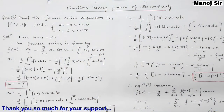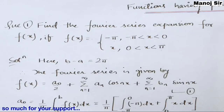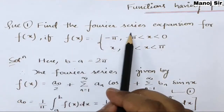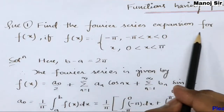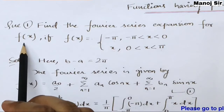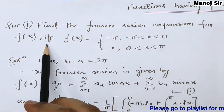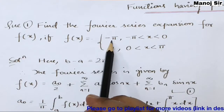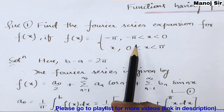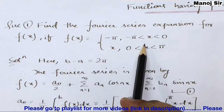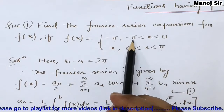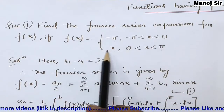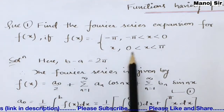Question 1 says: find the Fourier series expansion for the function f(x), where f(x) = -π when the interval is from -π to 0, and f(x) = x when the interval is from 0 to π.